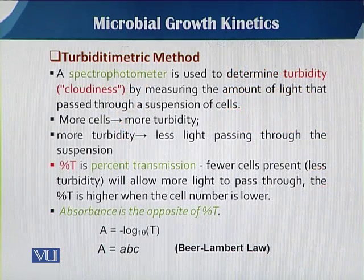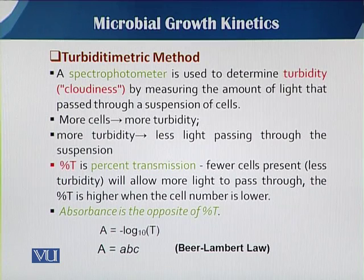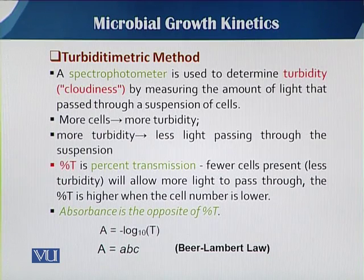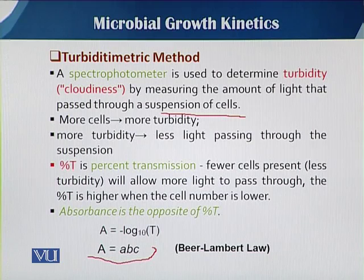Concerning the turbidity method, when growth happens the number of cells increases. Due to the increase in cell number, the cell culture becomes turbid. Because of this turbidity, when we check on the spectrophotometer — which measures cloudiness and acts on the Beer-Lambert law — we can estimate growth. The spectrophotometer gives readings in two terms: absorbance and transmittance.